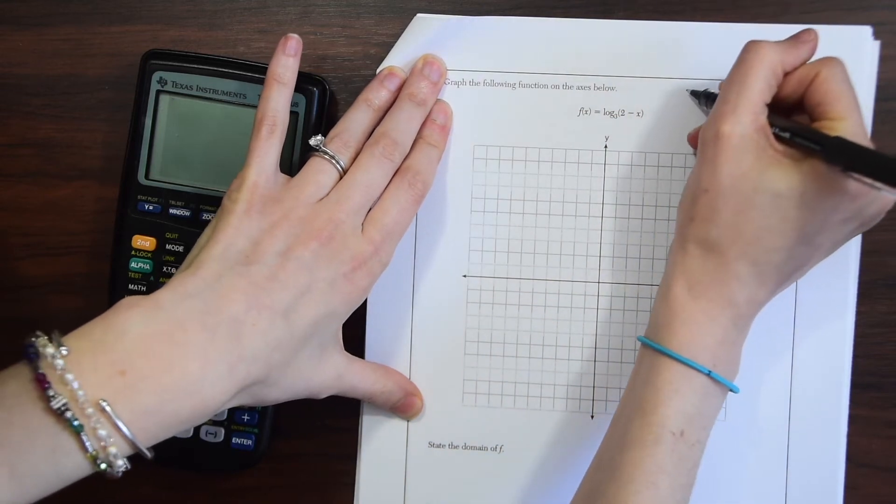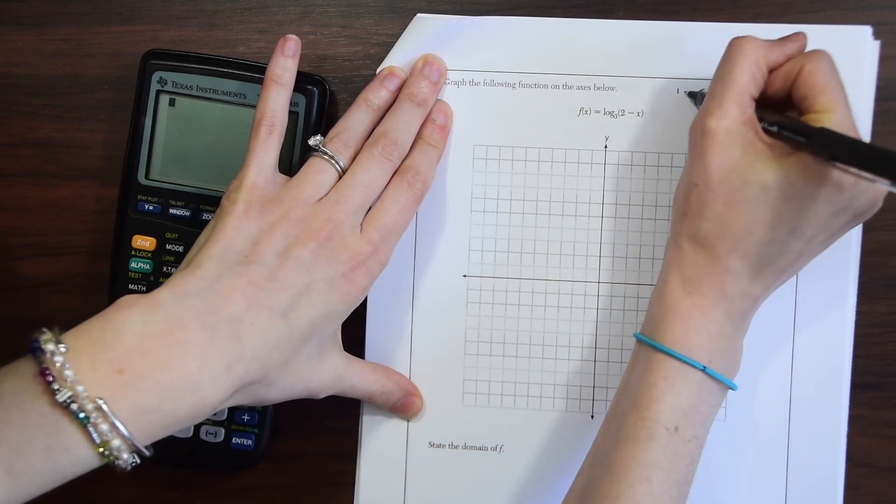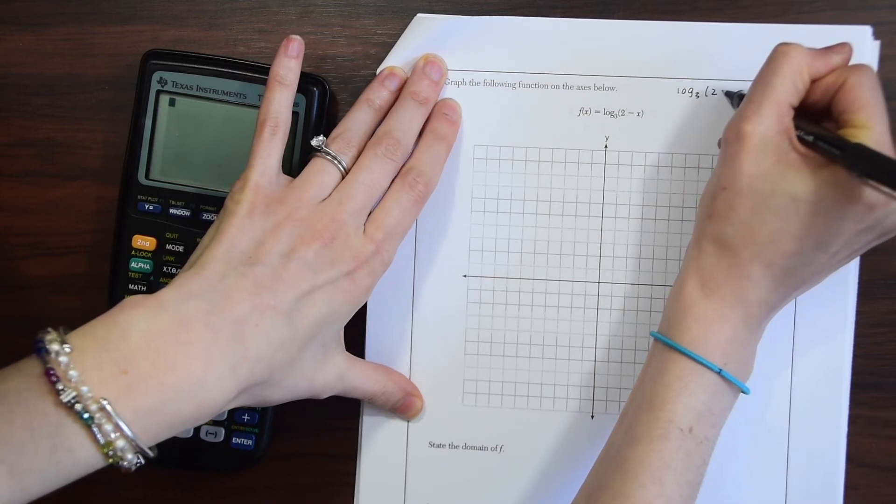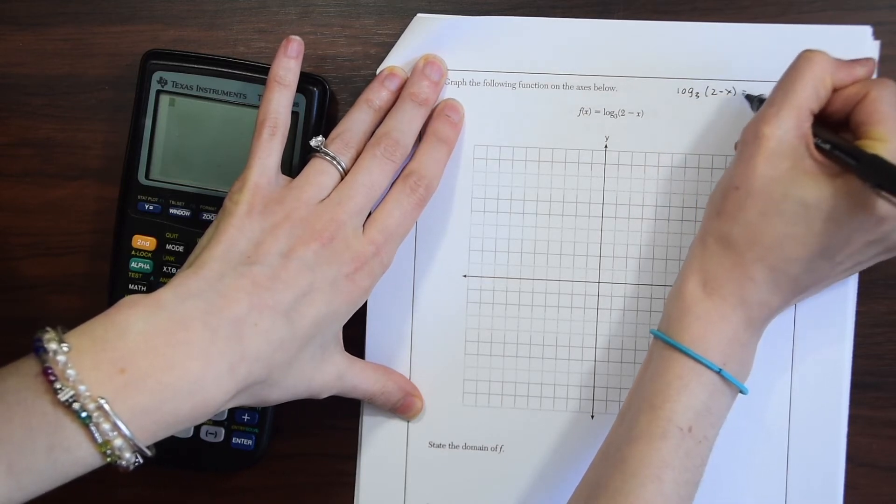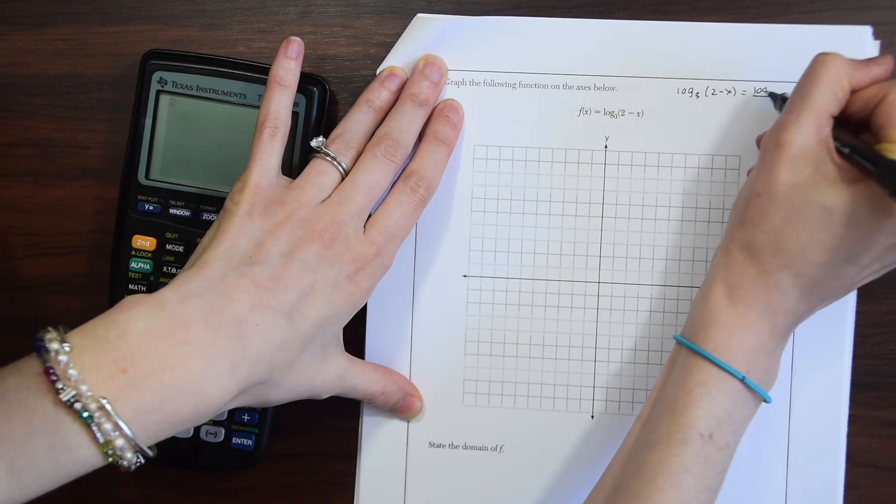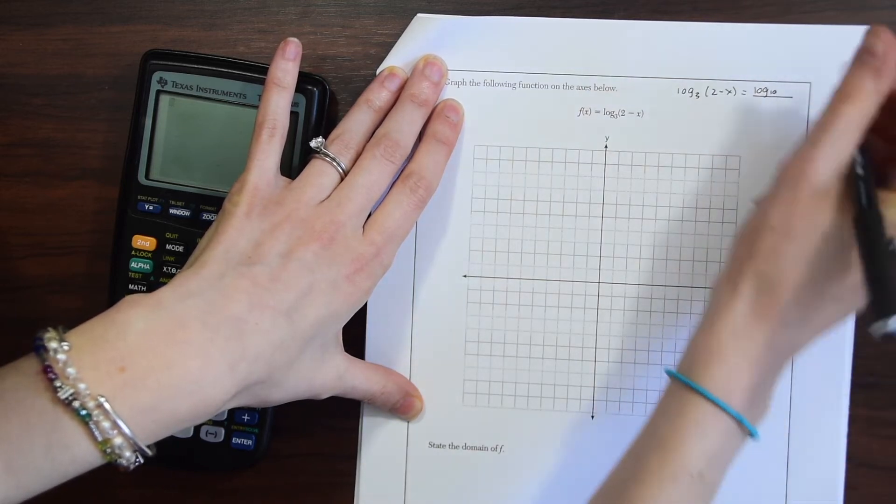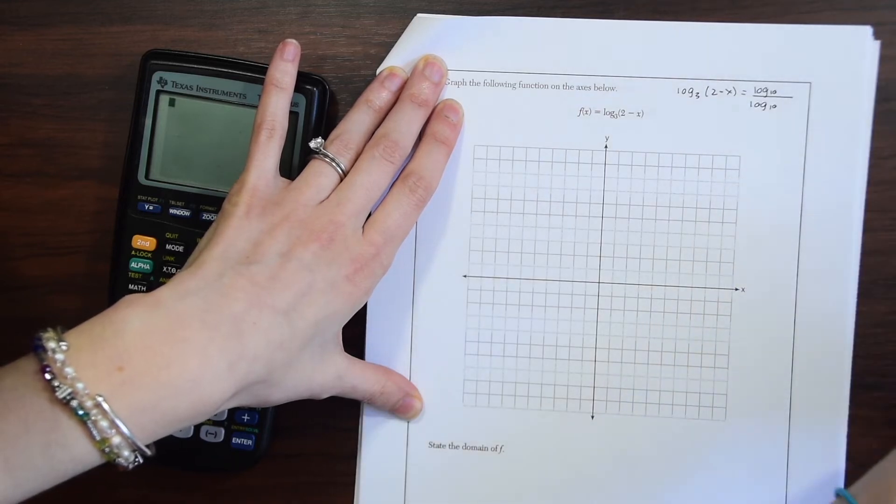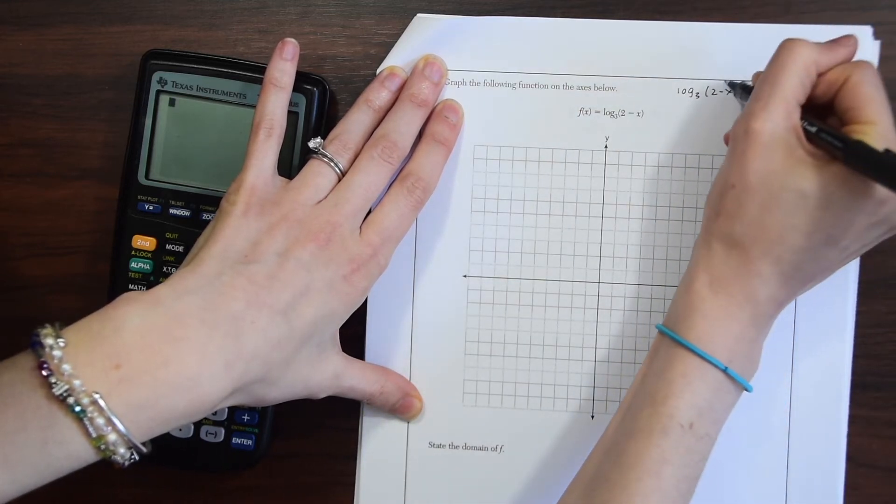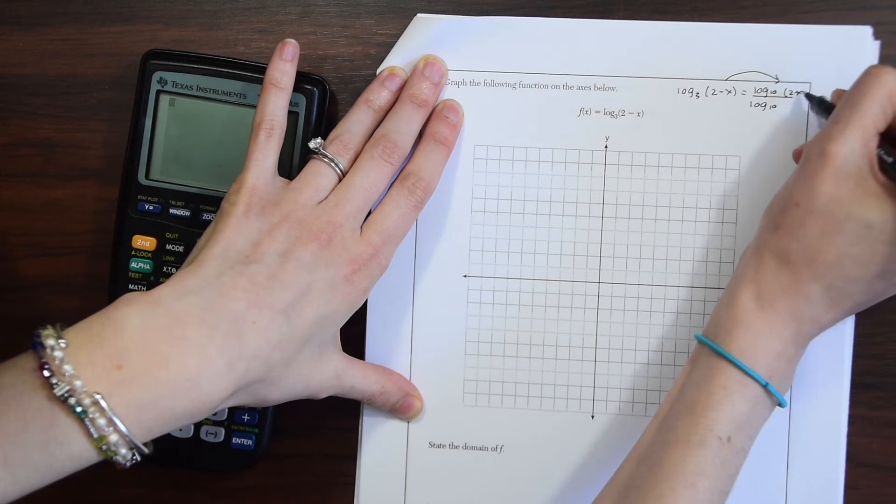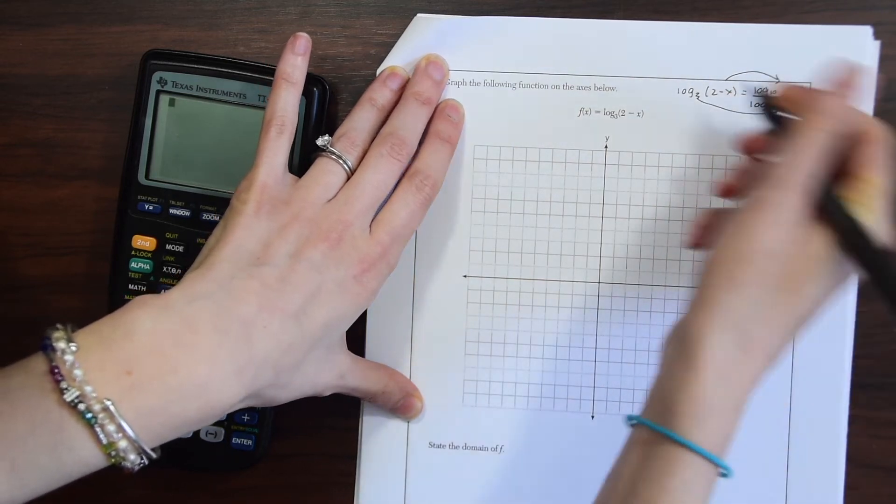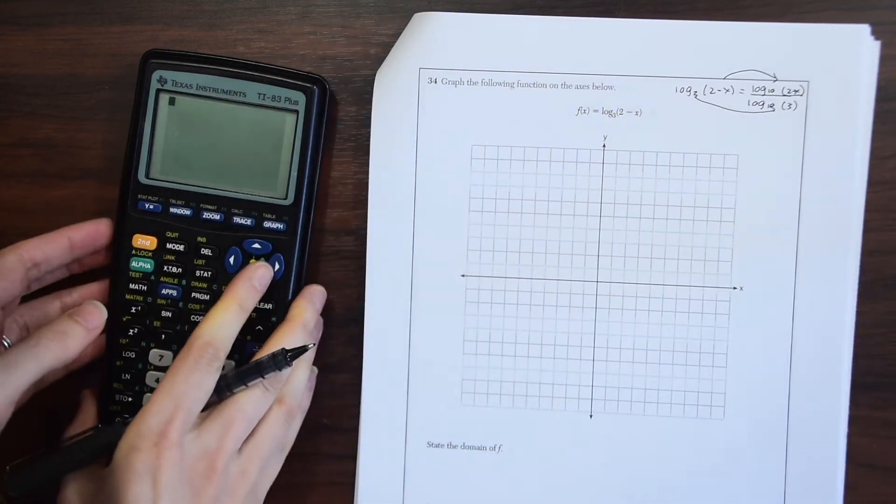Just a reminder of what that is: we have log base 3 of (2 - x) and we're going to make it into a fraction. It's log base 10 of (2 - x) on top, divided by log base 10 of 3 on the bottom. We have 2 - x up here and then down here we put the 3. This is exactly how we're going to plug it into our calculator.